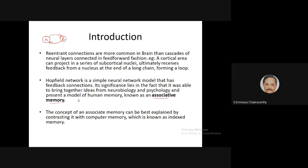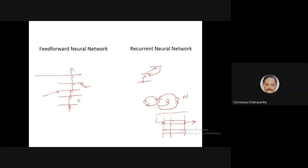Hopfield network is an example of a recurrent neural network, as opposed to a feedforward neural network. Until now we've been discussing perceptrons, MLPs, deep networks — all examples of feedforward neural networks in which information flows only in a single direction, so you never come back to the starting point because there are no loops.